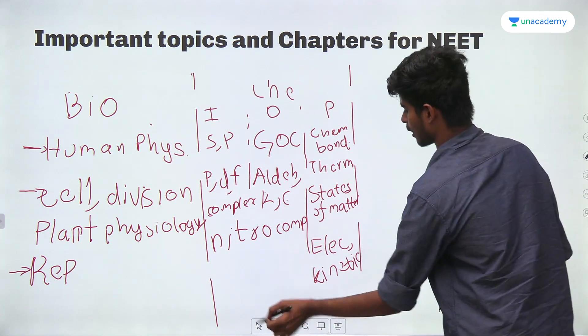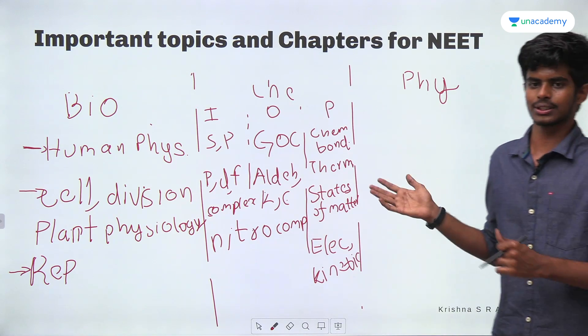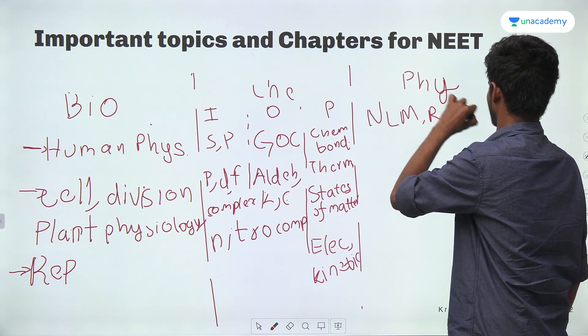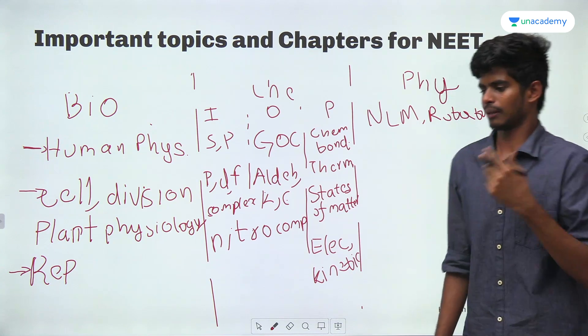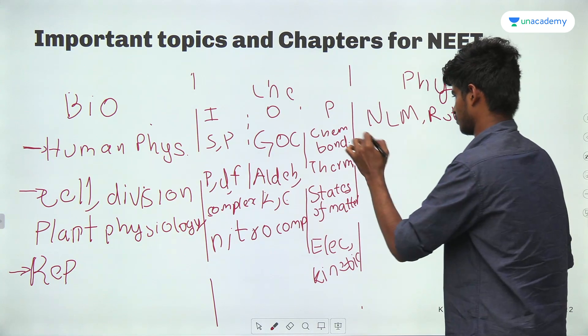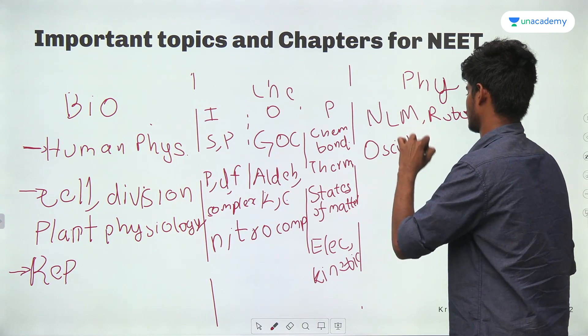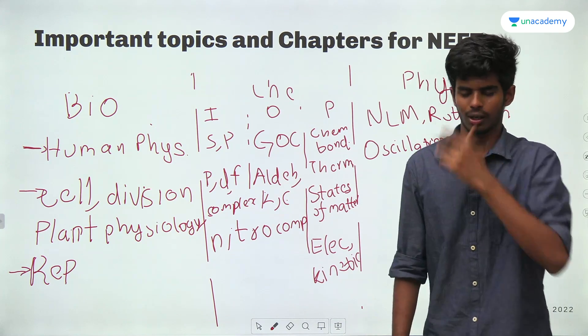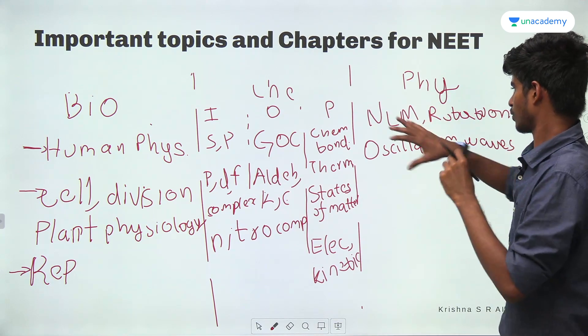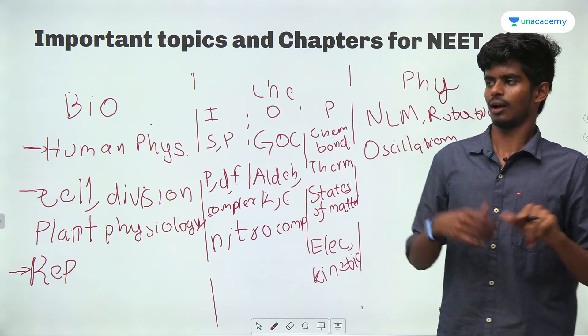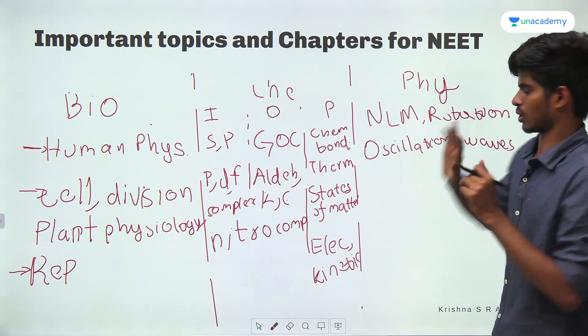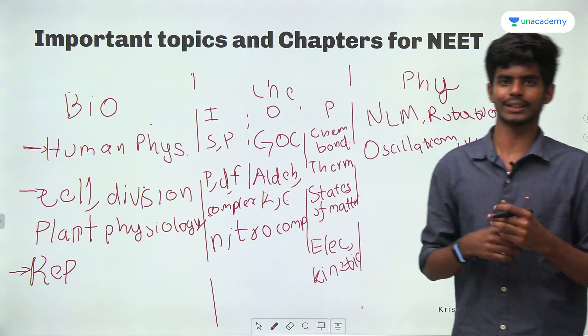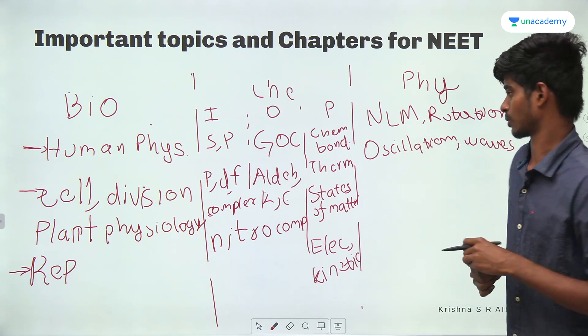Coming to physics for the 11th standard, first year - NLM is important. NLM and rotations, NLM rotations and oscillations and waves also very important. It does not mean that only you have to read those, but you can go a little bit in depth in these chapters I would suggest because I had done a lot of rotation kind of problems and laws of motion and also waves I have practiced a lot. A little bit extra away from the NCERT textbook.